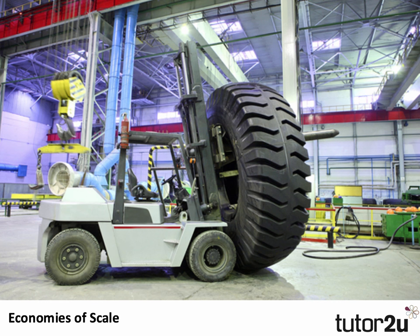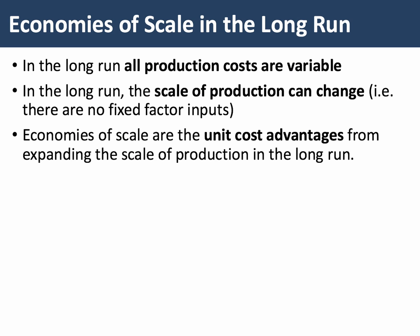So internal economies of scale, very simply, are the fall in long run average costs as the firm increases the scale of production. Don't forget that in the long run all production costs are variable, so we don't necessarily make a distinction between fixed and variable inputs. Essentially, as the business gets bigger it should be able to achieve scale economies, and that's true for pretty much all businesses, although of course the extent to which they can exploit them will vary from industry to industry.